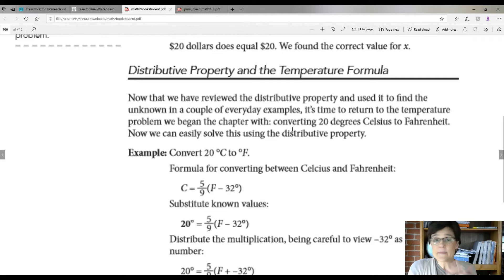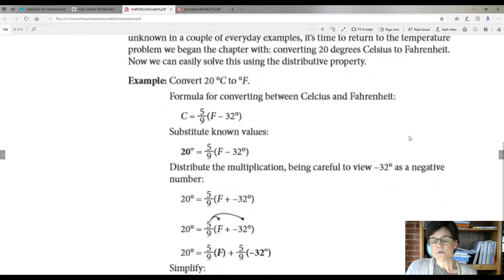Now we've rabbit trailed down something we needed to know in order to go back to our formula for converting the temperature. So our formula, our original equation was converting 20 degrees Celsius to degrees Fahrenheit. So this is our formula. We know what Celsius is, so we just plug the number in.